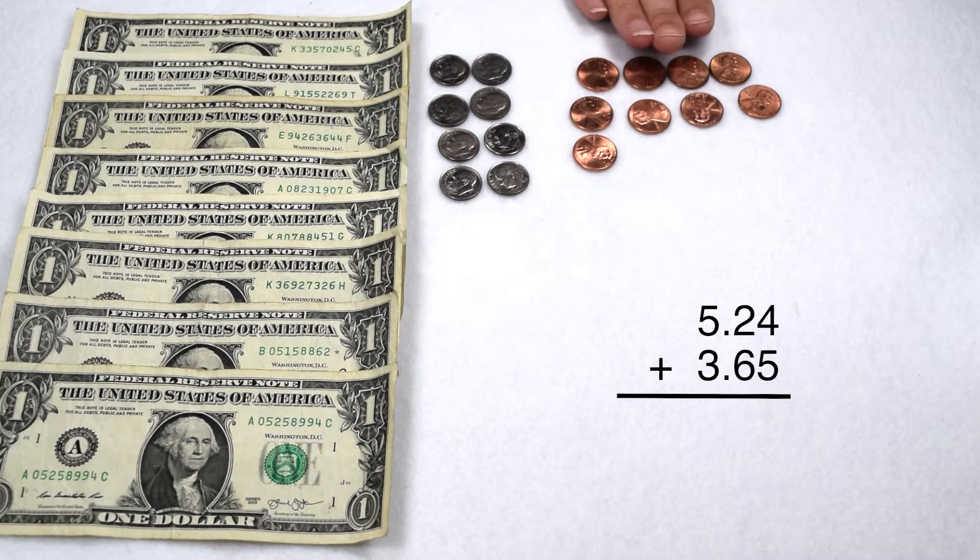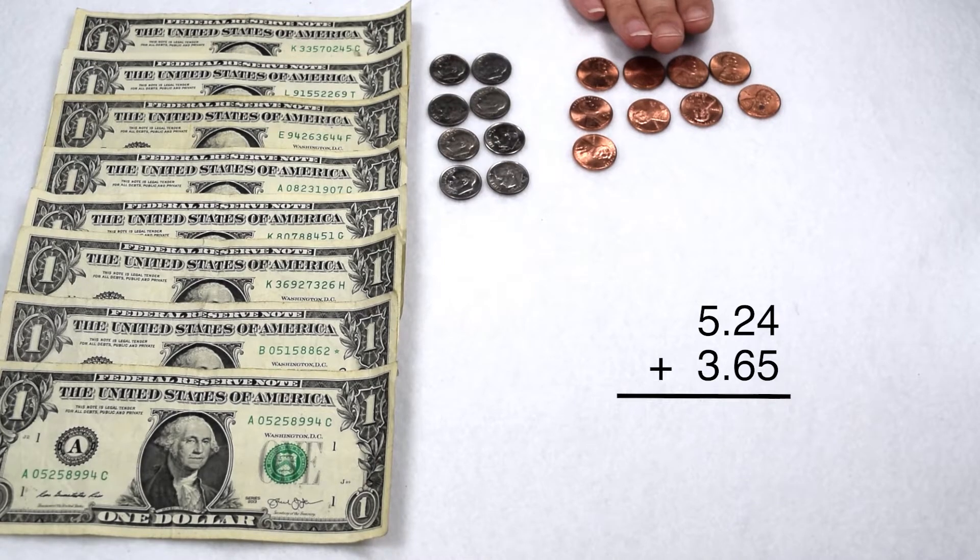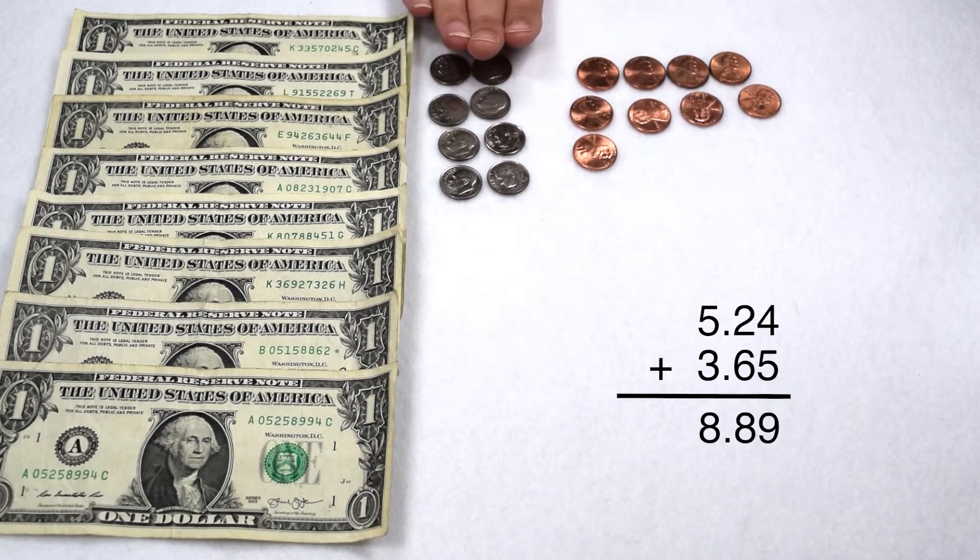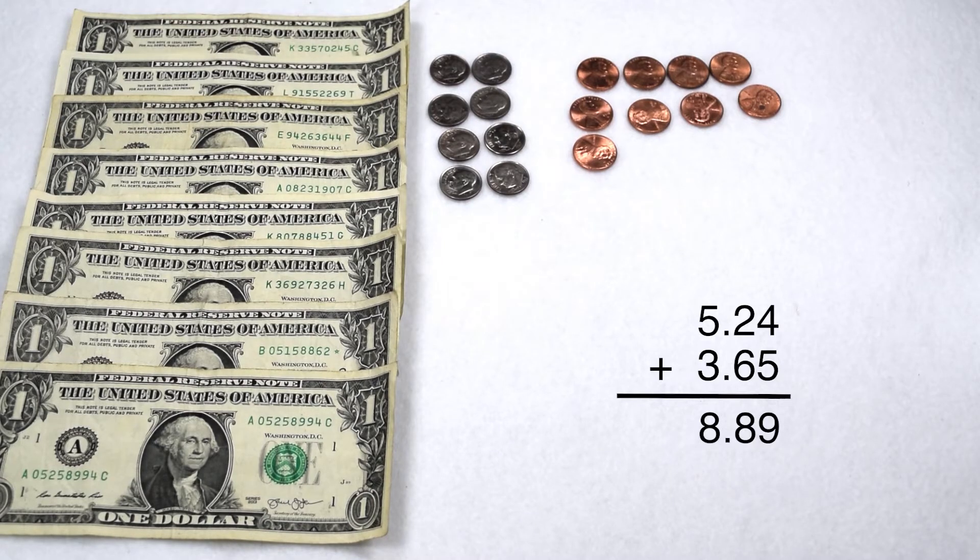Then I would add like normal. In my hundredths column, five plus four would give me nine. In my tenths column, two plus six would give me eight, and in my whole number column, five plus three would also give me eight. I would come out with eight and 89 hundredths.